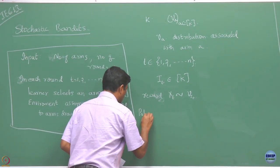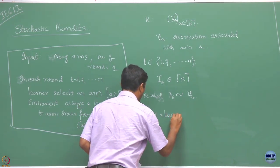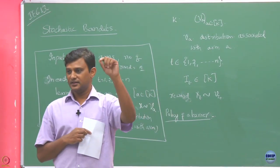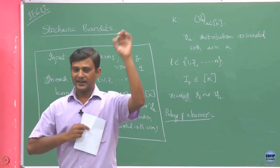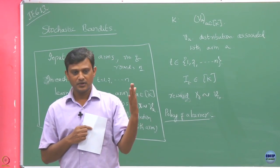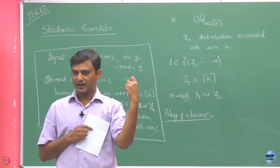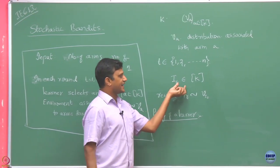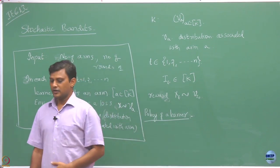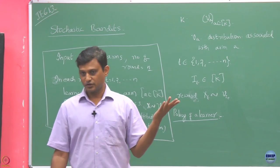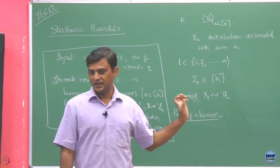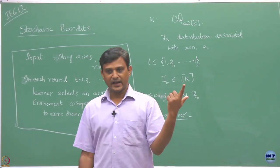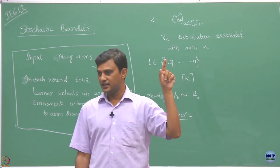Now I assume that when a player plays an action, what he gets is a reward, and his goal will be to accumulate the maximum number of rewards. The reward X_T is drawn from the distribution nu of I_T. In the stochastic setting, the environment's setup is simple: the environment has already decided the distribution for each arm — that is fixed — and every time you select an arm, it draws one sample from that distribution and reveals it to you.